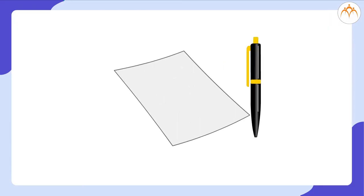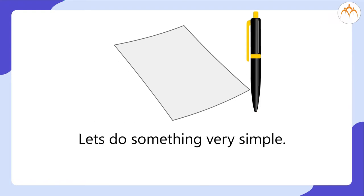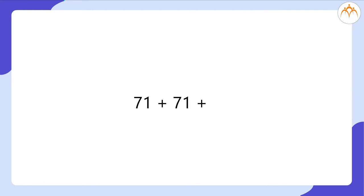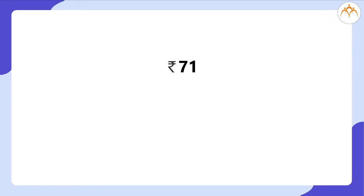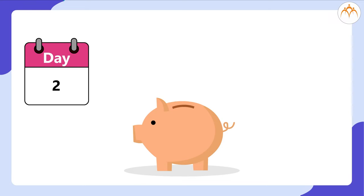Are you ready with your pen and paper? Let us do something very simple. Let us calculate the answer for 71 plus 71 plus 71. The answer is 213, right? What does it mean? Say, I deposit 71 rupees every day in my piggy bank for the next three days.